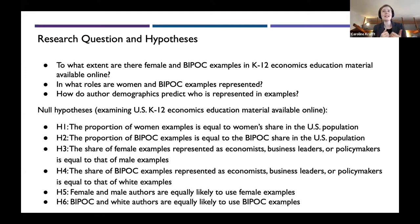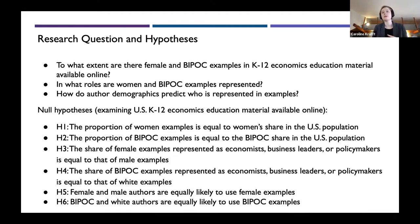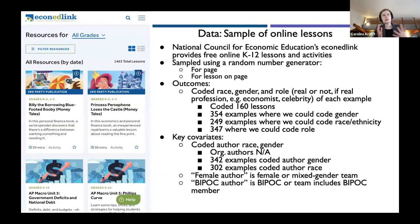We're focusing on US K-12 economics education materials available online, and I'll note these are null hypotheses. The first hypothesis is whether the proportion of women examples equals women's share in the US population. Second, whether the proportion of BIPOC examples equals the BIPOC share in the US population. Third, whether the share of female examples represented as economists, business leaders, or policymakers is the same as that of male examples. Likewise, whether the share of BIPOC examples in those roles equals that of white examples. And finally, whether female and male authors are equally likely to use female examples, and whether BIPOC and white authors are equally likely to use BIPOC examples.